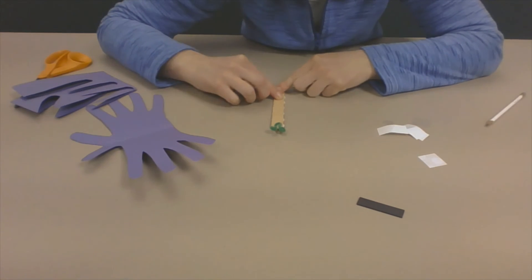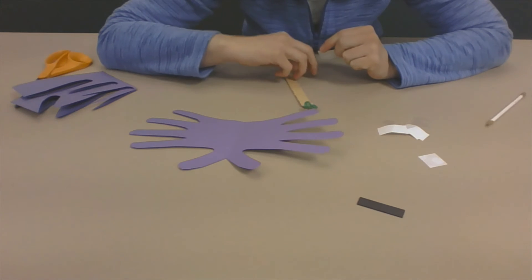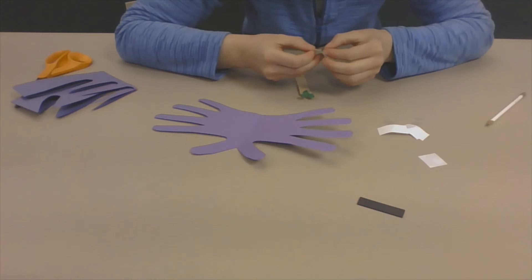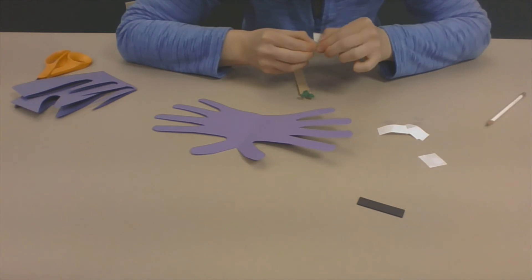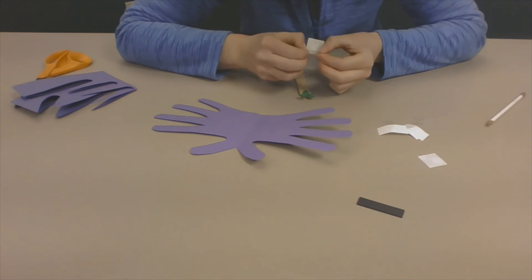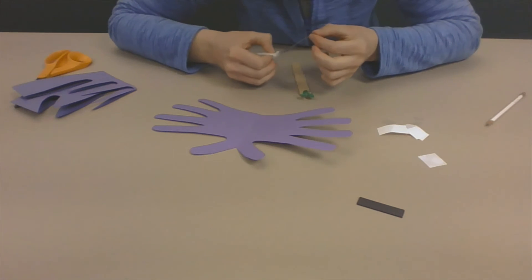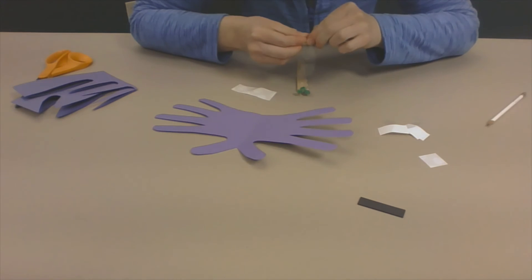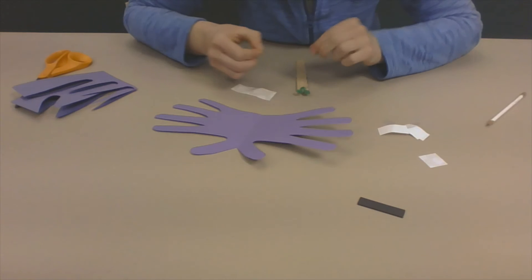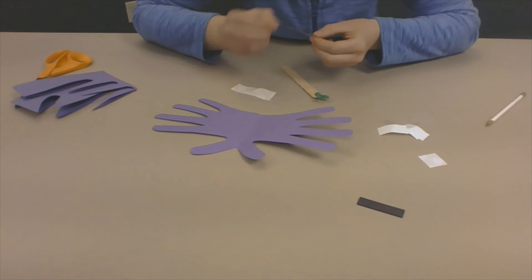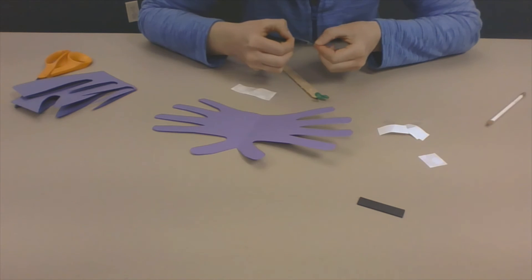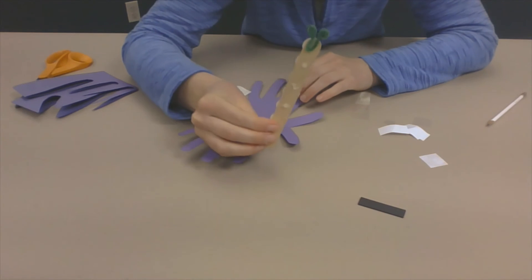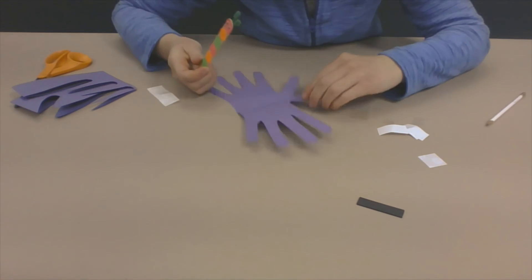Okay and the next thing you want to do is you want to take the rest of your glue dots here and you want to put them on the back of your popsicle stick because we're gonna attach it to its wings. Okay so you can work on sticking your dots to the back of your popsicle stick.